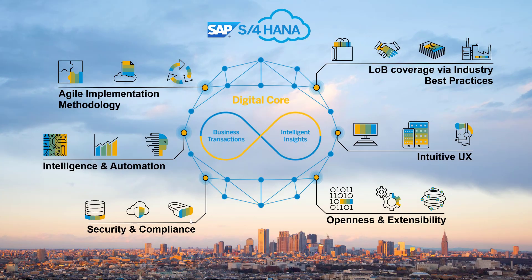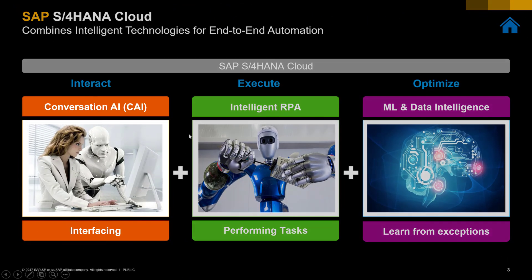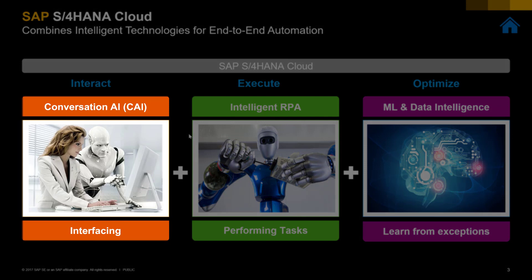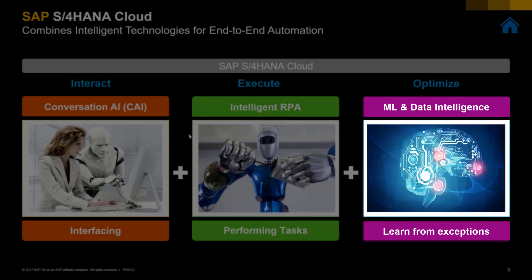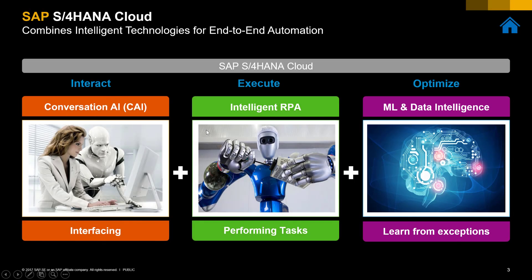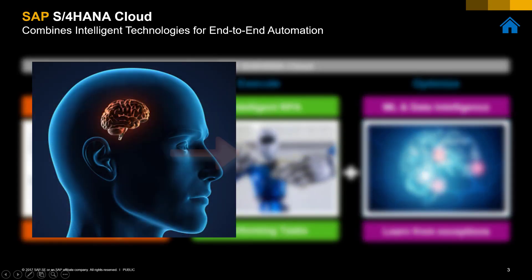Next we're going to be looking at the intelligent technologies of S4HANA Cloud and how they increase automation. Conversational AI is about user interaction — automated chatbots assist users with accessing information, providing guidance and even executing transactions. Intelligent robotics process automation automates standard processes via recorded transactions to execute repetitive and time-consuming tasks automatically. Machine learning algorithms learn from customer-specific behavior and exceptions to predict, support steps, automate and optimize business user decisions. S4HANA Cloud is strategically developed with these technologies to help businesses transform from being clever to being intelligent.